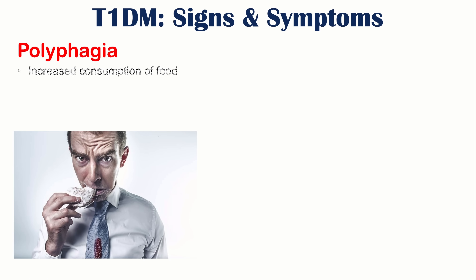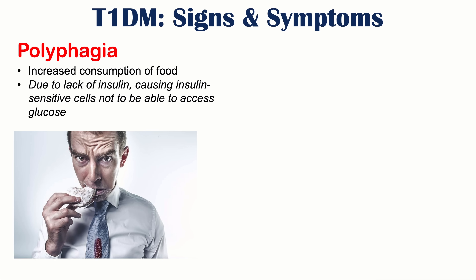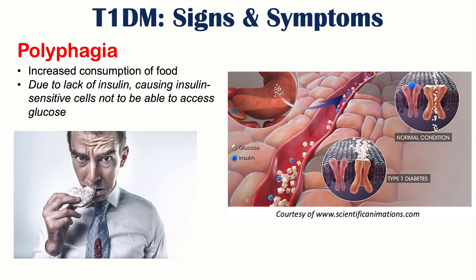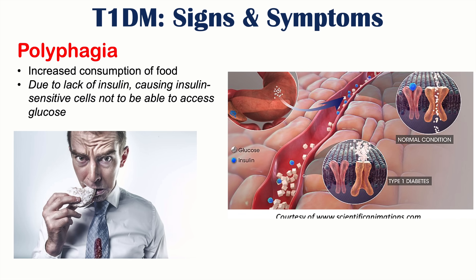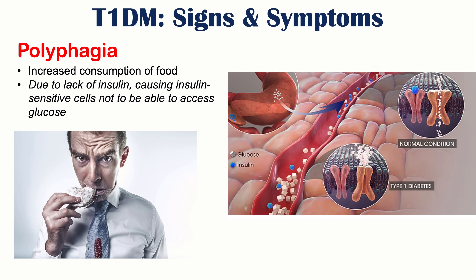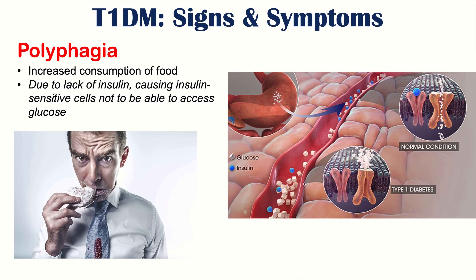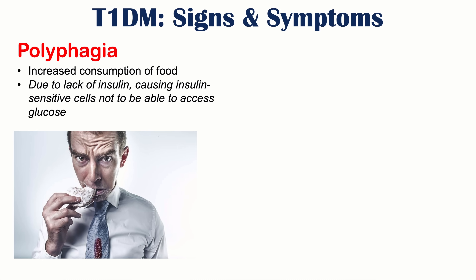Type 1 diabetes patients can also experience polyphagia, which is increased food consumption — feeling very hungry and eating more than usual. This is because of the lack of insulin: insulin-sensitive cells are not exposed to insulin and cannot access glucose. Because those cells cannot access glucose, they signal the patient to feel hungry.